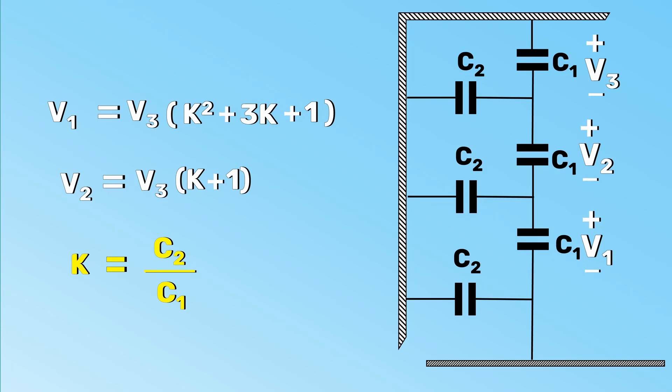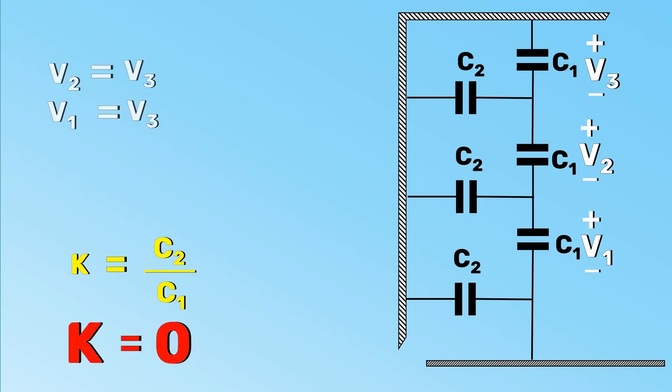To learn how we derive these equations, I would recommend you to watch my previous video on voltage distribution across the string of suspension insulators. Let's go back to our equation. If you substitute the K value as 0, then we will get V2 equals V3 and V1 equals V3. This means all three voltages are equal. Yes, this is what we need. We want K to be 0.